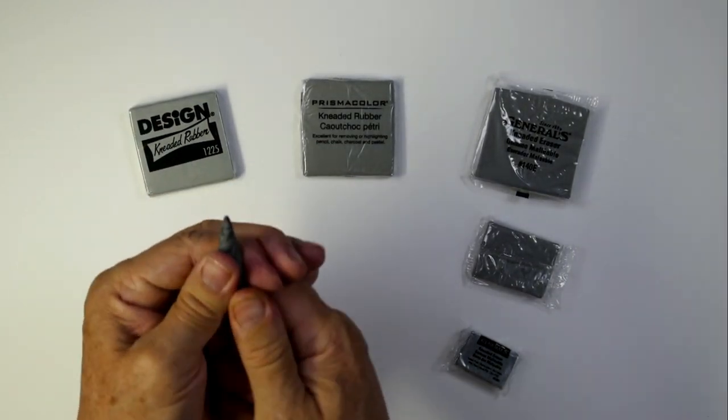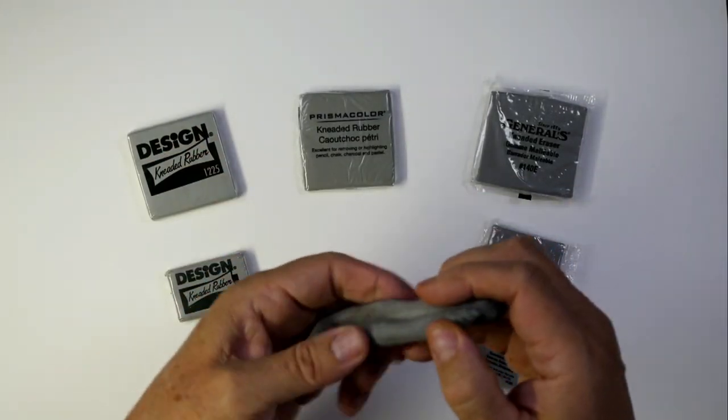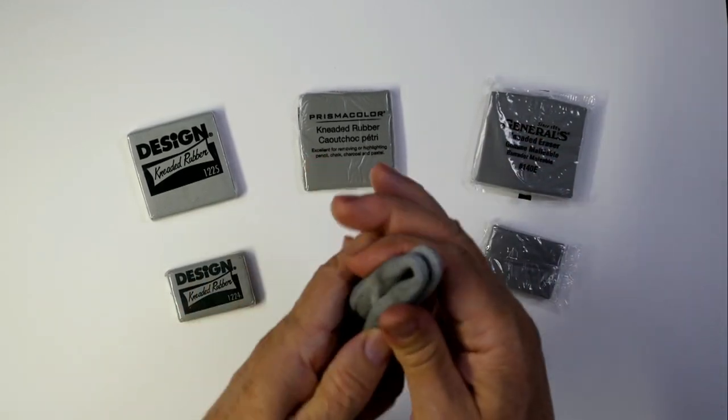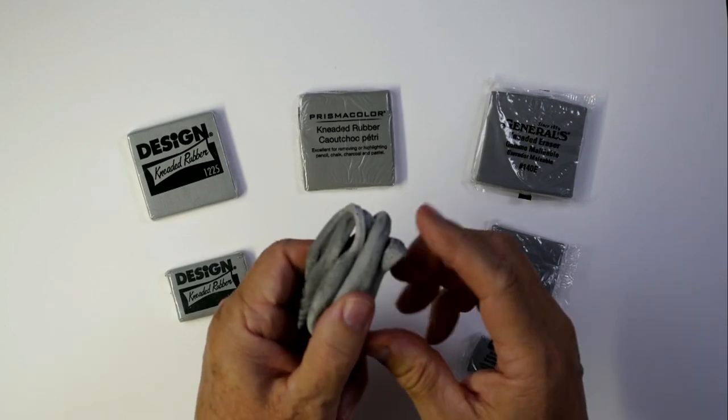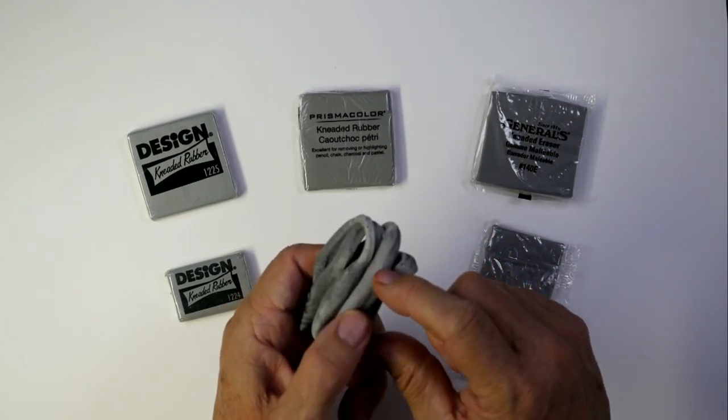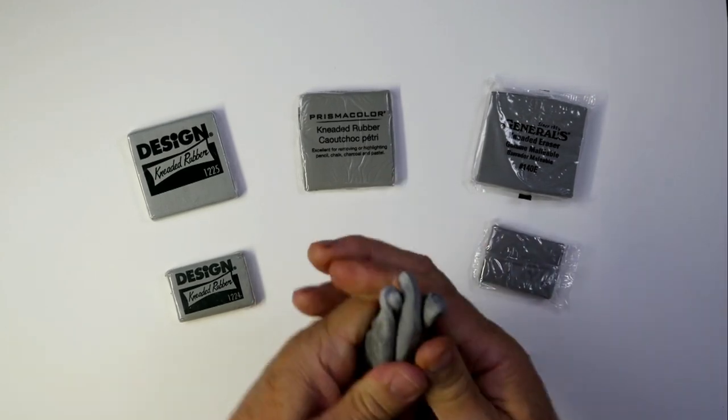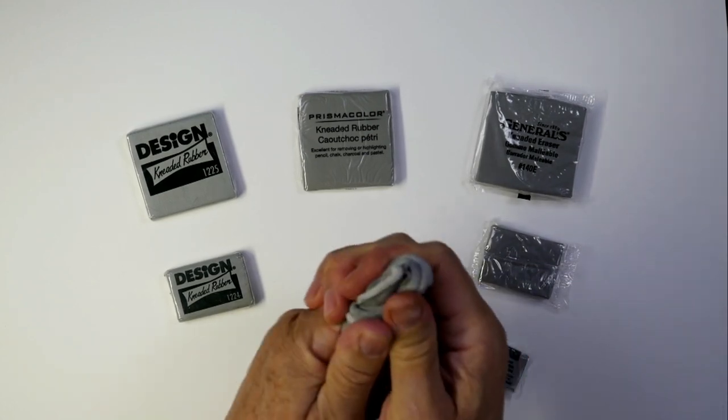Once you finally get this thing to where it's starting to move, you pull it like taffy. There's many different ways you could do this. I'm making a point, making it long. I'm going to fold it over, stretch it again, fold it over, stretch it again, and fold it over. Well, look what's happening. That dark, dark eraser is starting to lighten up. This is pretty neat.